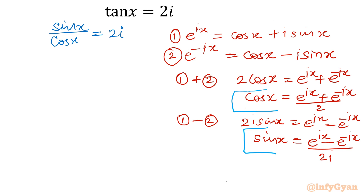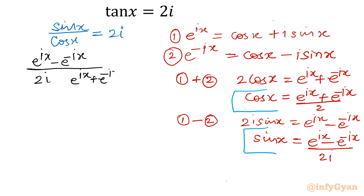Let's put both values into the given equation. In place of sin x we write (e^(ix) − e^(−ix)) / 2i, and in place of cos x we write (e^(ix) + e^(−ix)) / 2. This gives [(e^(ix) − e^(−ix)) / 2i] divided by [(e^(ix) + e^(−ix)) / 2] = 2i. The two factors of 2 cancel.